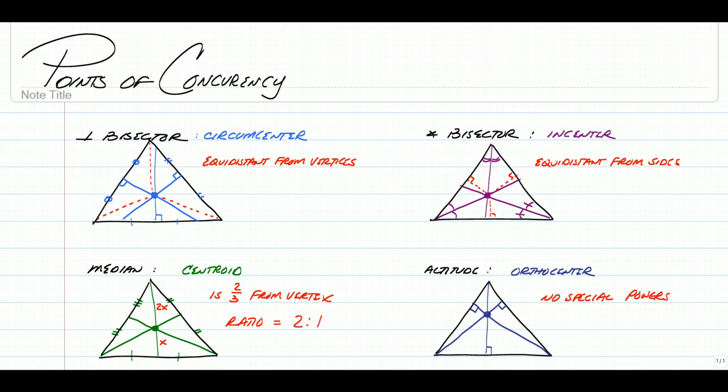On an angle bisector, any point on an angle bisector is always equidistant from all sides. So if you have three angle bisectors of a triangle, then they're going to meet at a point called the incenter, and that incenter will be equidistant from all three sides of the triangle.